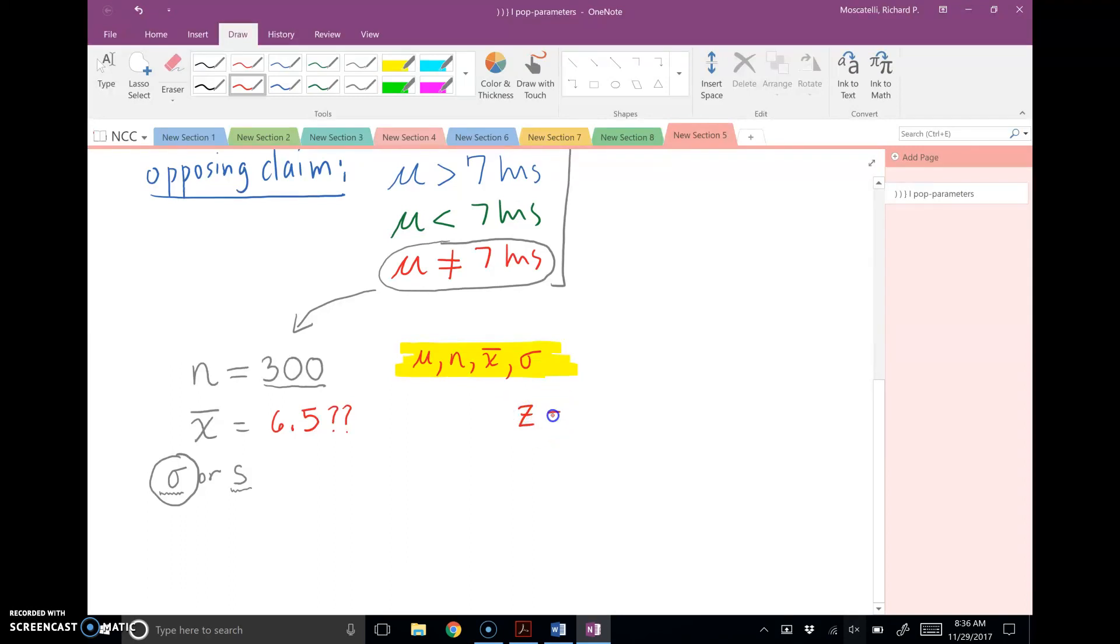Now, under the central limit theorem, remember the z-score, it's x-bar minus mu x-bar, but remember the mean of the sampling distribution, mu x-bar and mu are the same, so I'll just write mu there, and you divide by what we call the standard error, which is sigma over radical n.